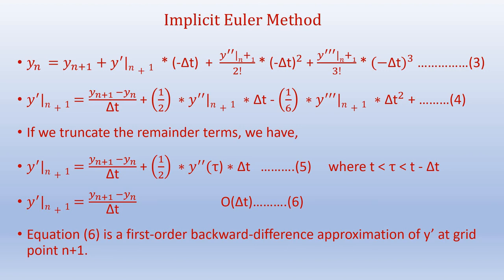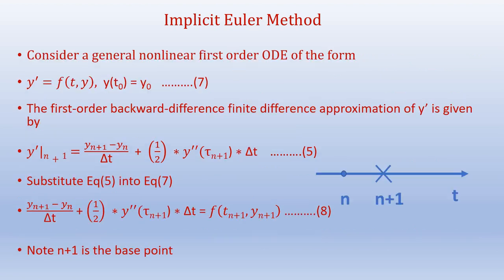Equation 6 is a first-order backward difference approximation of y dash at grid point n plus 1. Now consider a general nonlinear first-order ODE of the form y dash equals f of t comma y. The initial condition is given as y at t naught equals y naught. The first-order backward difference finite difference approximation of y dash as given in equation 5 is reproduced here.